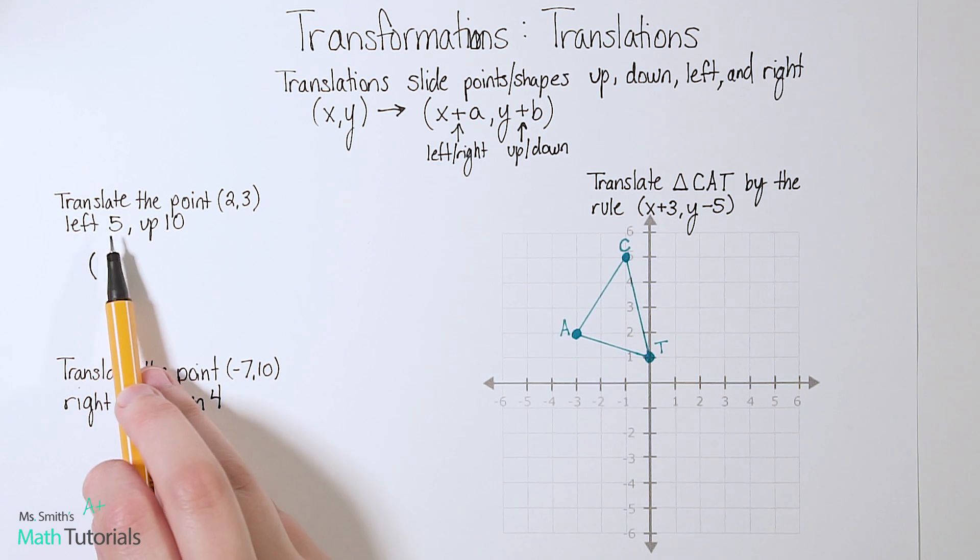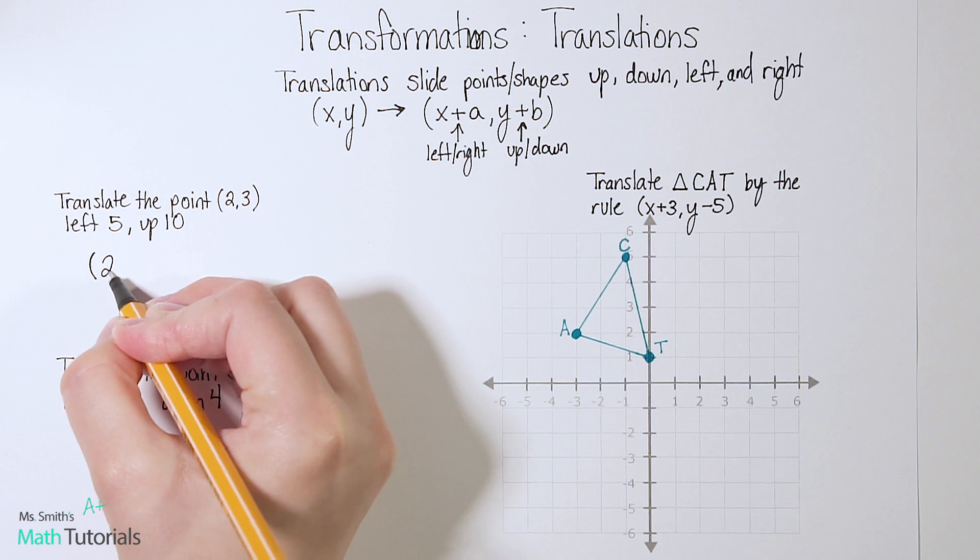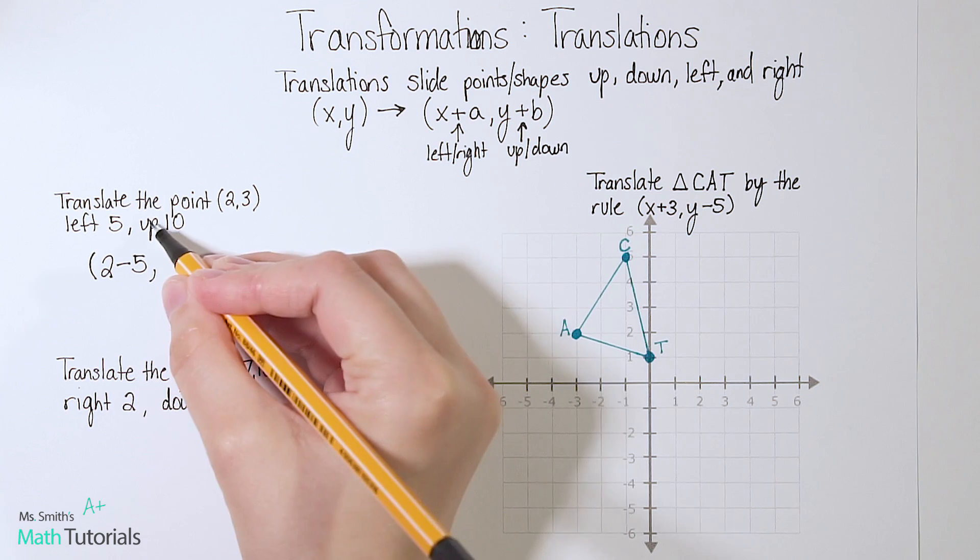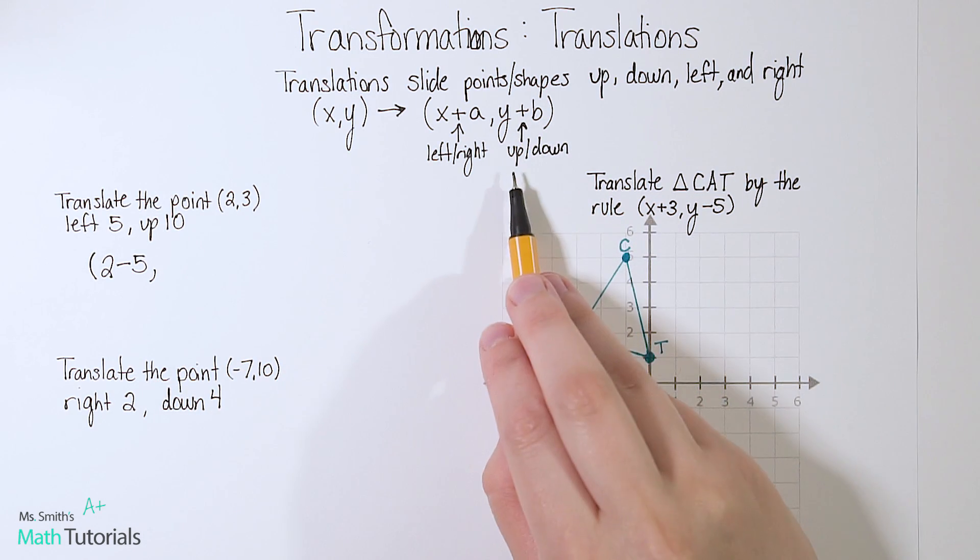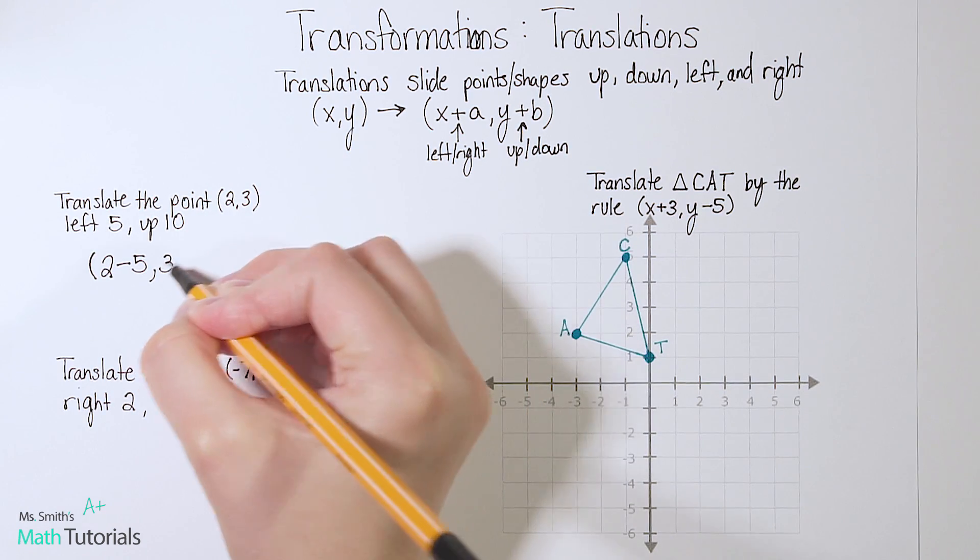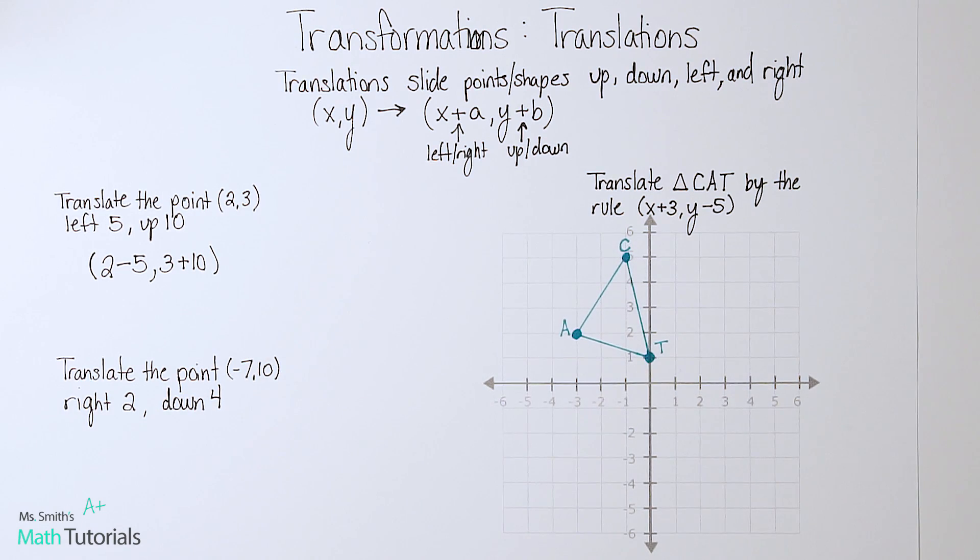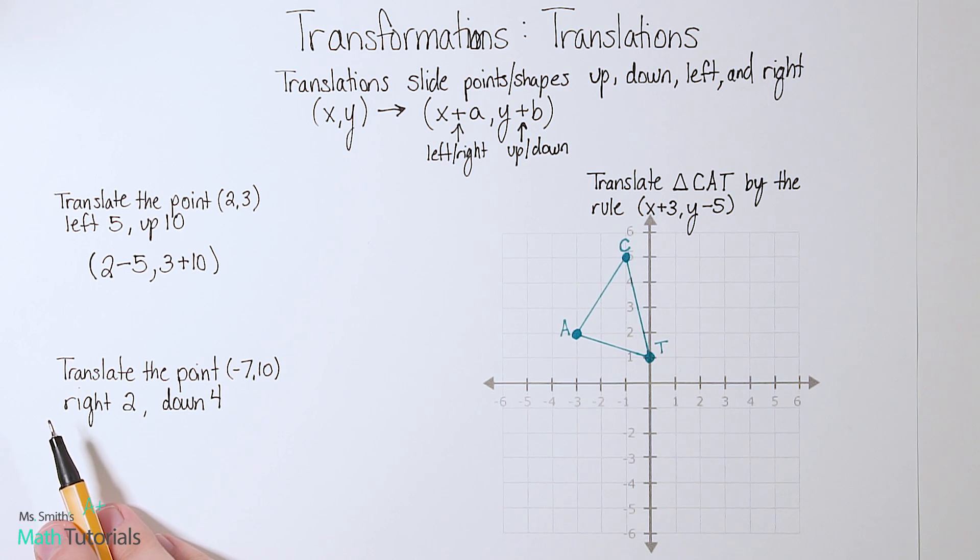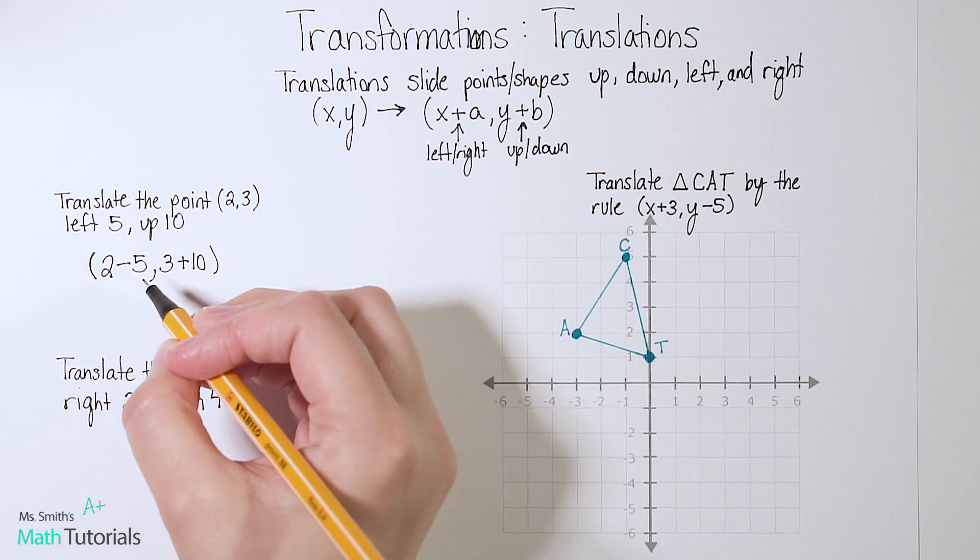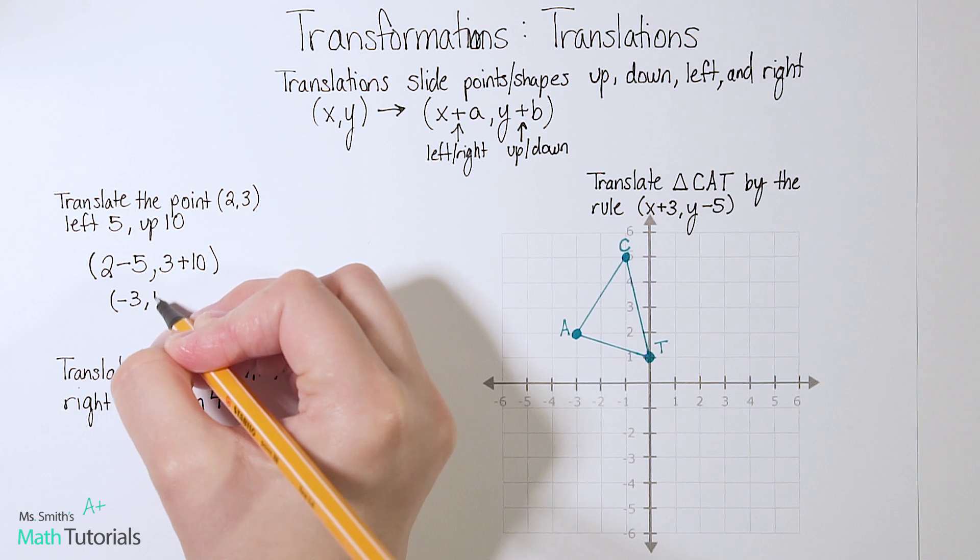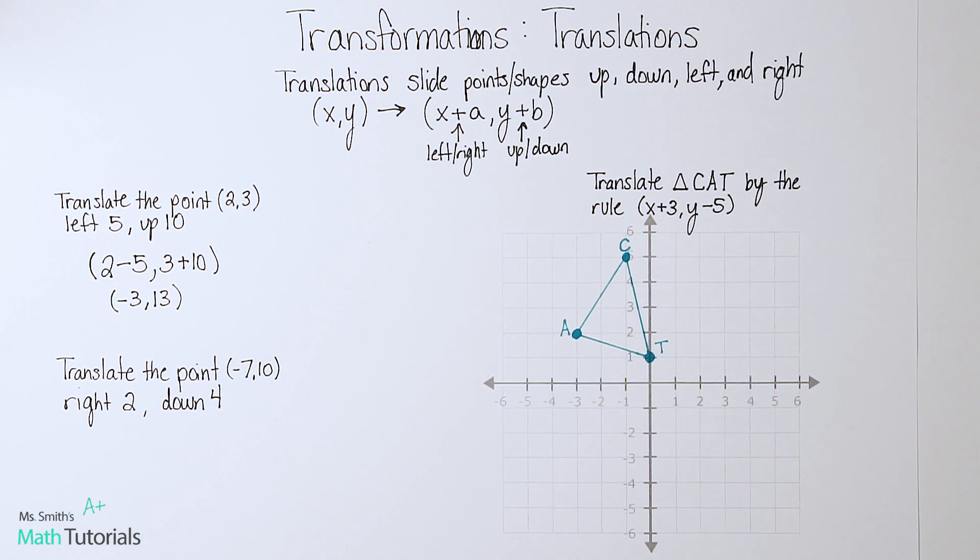Because they've said left 5, we're going to take our x value, 2, and subtract 5. Now for our up 10, remember up is our y value. And if it's positive, that's when we move up. So in this case, we'll take 3 and add 10 to it. Now of course, we'd want to simplify this. So what is 2 minus 5? 2 minus 5 is negative 3, and 3 plus 10 is positive 13.